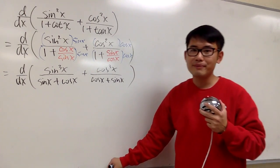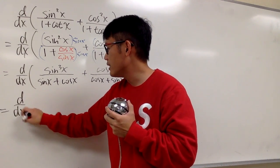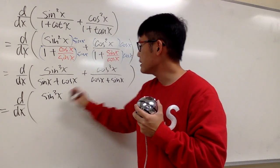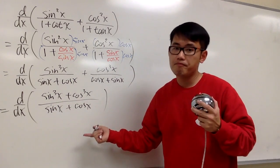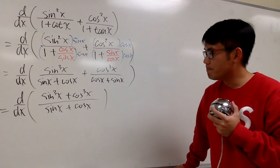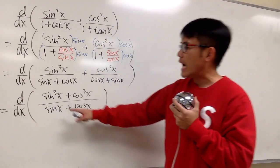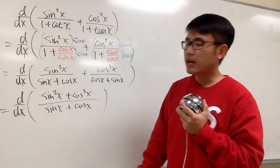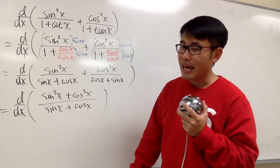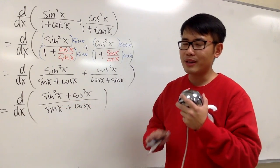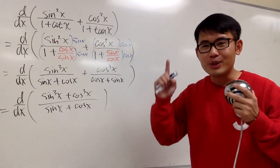The denominators are now the same, so we can add the fractions together. We get d/dx of: sine to the third power x plus cosine to the third power x, all over sine x plus cosine x. Don't make a mistake — don't try to cancel sine with sine and cosine with cosine directly. We can cancel, but we have to do it correctly.